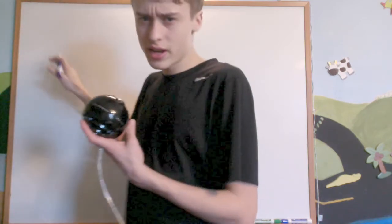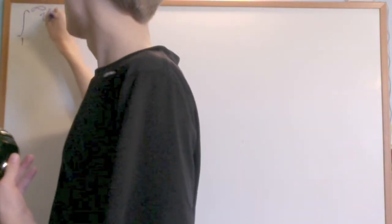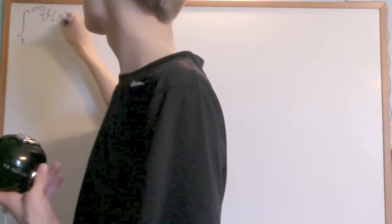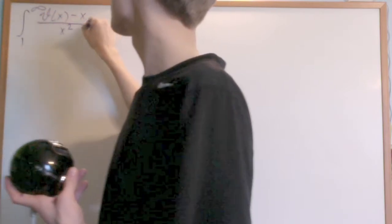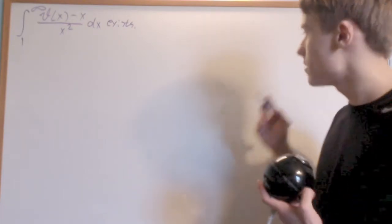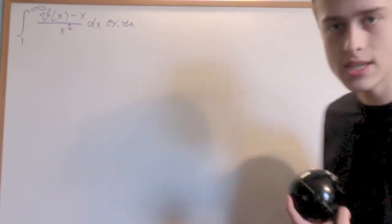What I'm going to prove in this video using the phi function is that the integral from 1 to infinity of theta of x minus x over x squared dx exists. It's going to diverge, so we use the phi function like we did with the zeta function to prove that it has no zeros on the line real part of z equals 1.